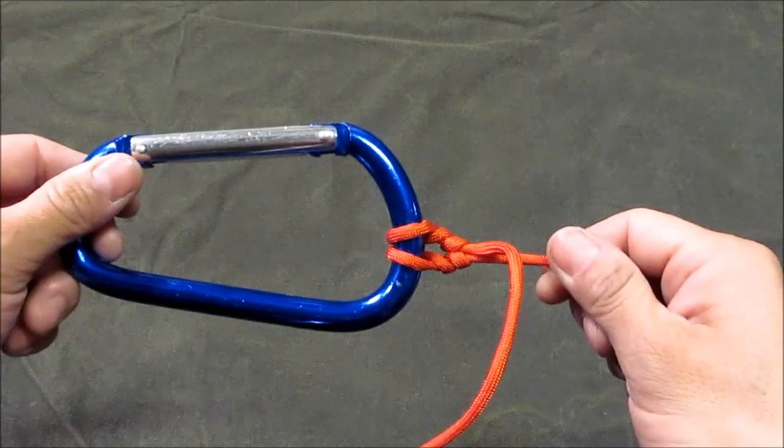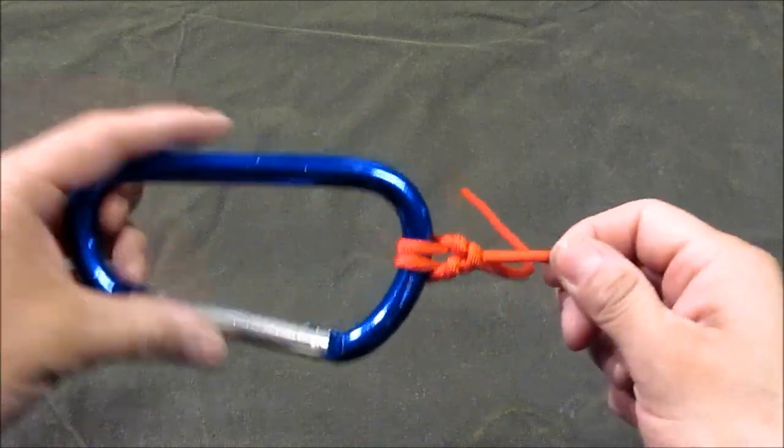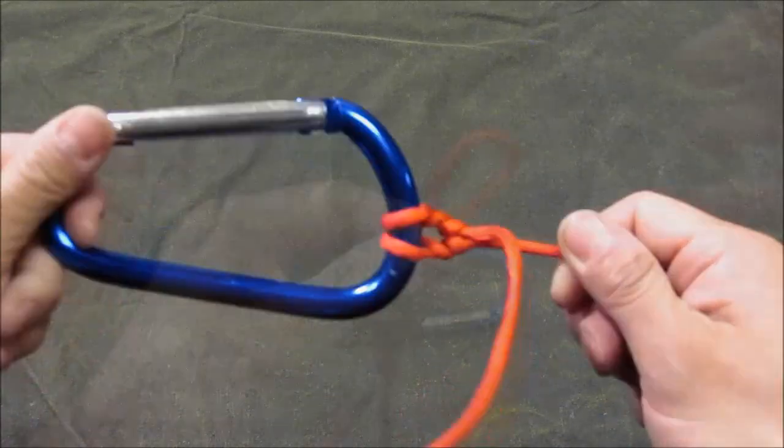This is a cat's paw. It's used for hoisting loads with hooks. And here's how you do it.